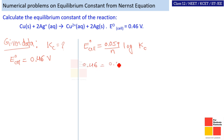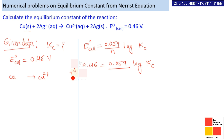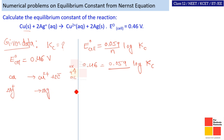For n, we look at the reaction: copper 2 plus, where the plus charge increases — that is oxidation. Oxidation means loss of electrons. 2 electrons are lost here. Also, 2Ag plus gives 2Ag — the plus charge decreases, which is reduction. So n equals 2.